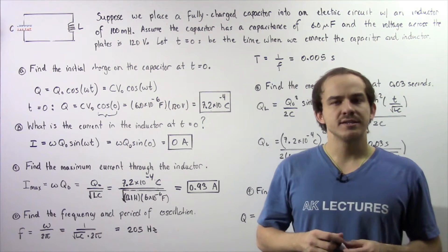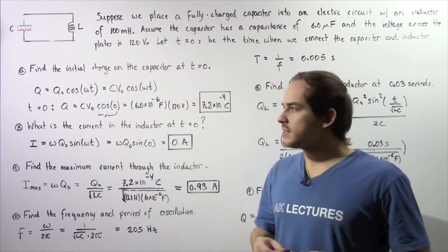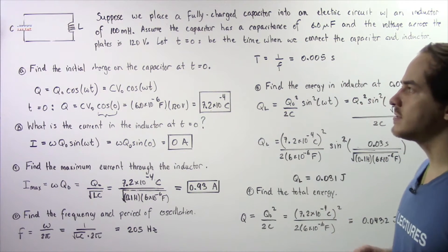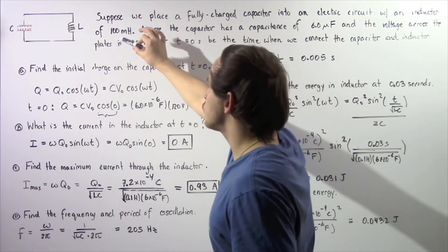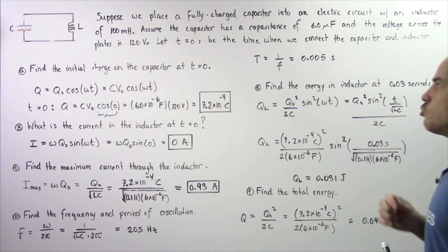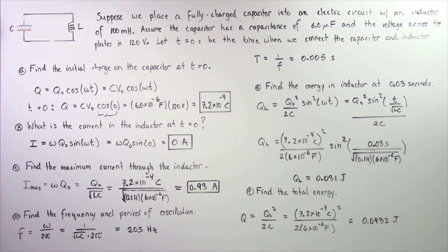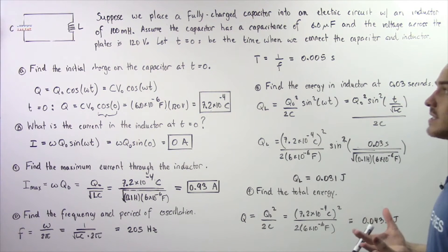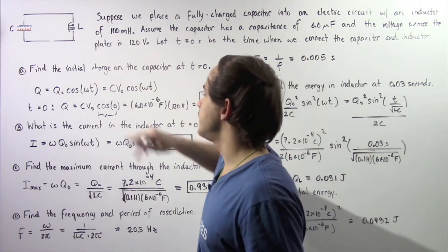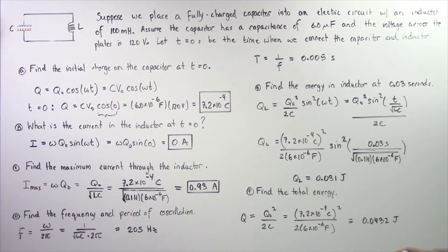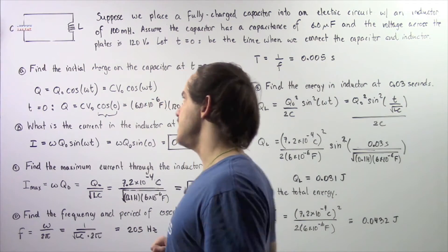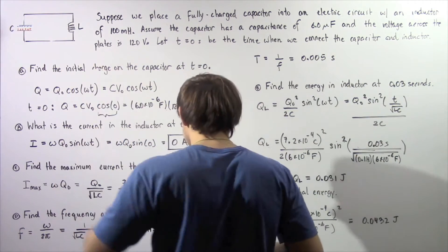In the previous several lectures we discussed LC circuits. Now let's examine the following example that deals with an LC circuit. Suppose we place a fully charged capacitor into an electric circuit with an inductor of inductance of 100 millihenries. The capacitor has a capacitance of 6 microfarads and the voltage across the plates of the capacitor initially is 120 volts. Let T equal 0 seconds be the time when we connect the capacitor and the inductor into our closed LC electric circuit, as shown in this diagram.